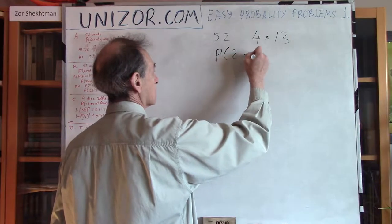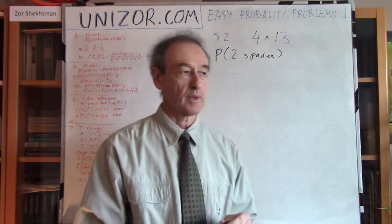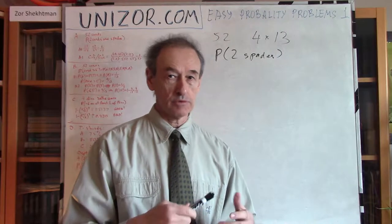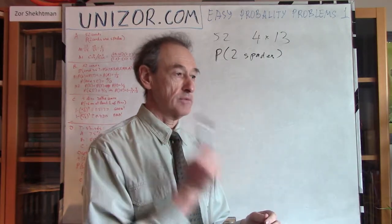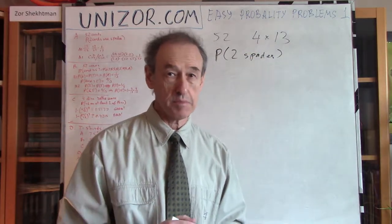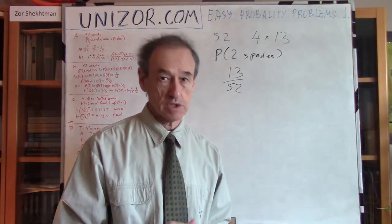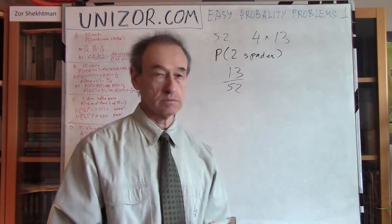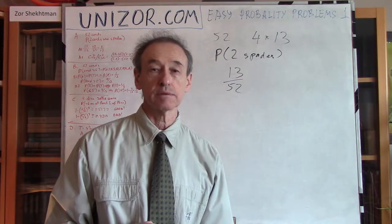I suggest two different ways to solve this problem. Way number one: to pick two spades, you pick the first spade and the second spade as two completely independent random choices. If you have 13 different spades in a deck of 52, the probability to pick the first spade is 13/52, because all cards have equal probability 1/52, and 13 of them are spades. That's the probability to pick a spade on the first pick.